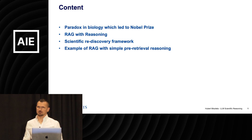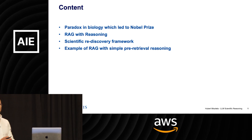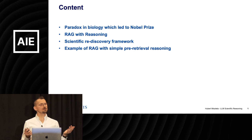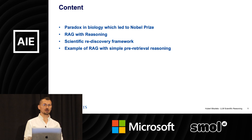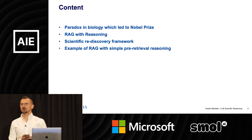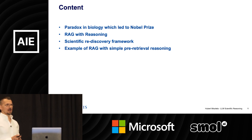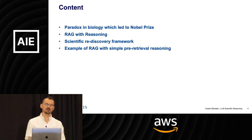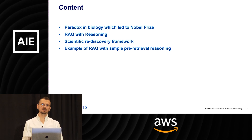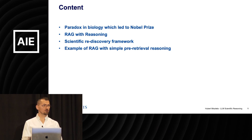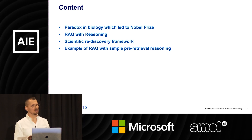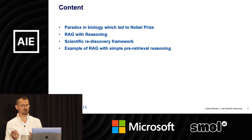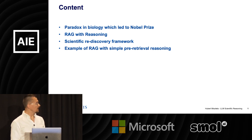Today I'm going to talk about a few things. I'm probably going to leave you with more questions than responses and more problems than solutions, but I think it's worthwhile. First I'm going to show you an interesting paradox in biology which led to a Nobel Prize discovery. Then I'll talk about reasoning with RAGs — you've seen many different themes of RAGs and agentic RAGs during this conference. Then a scientific discovery framework, specifically how we can build a system using RAGs to help us in those scientific discoveries. And in the end I'll show you a few examples of experiments.